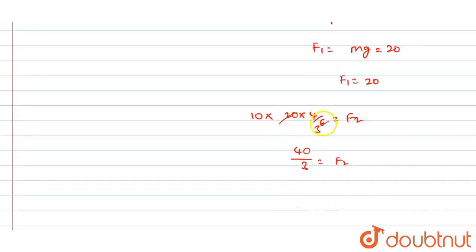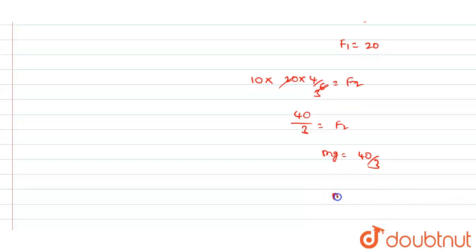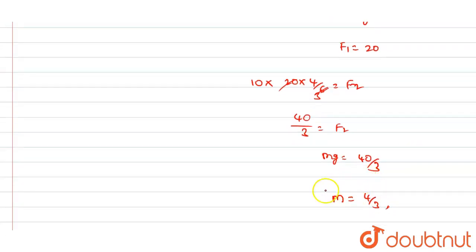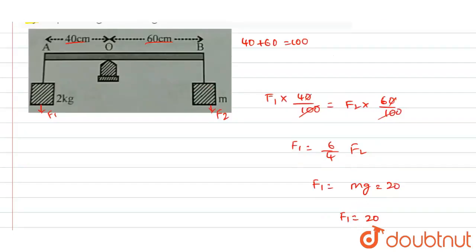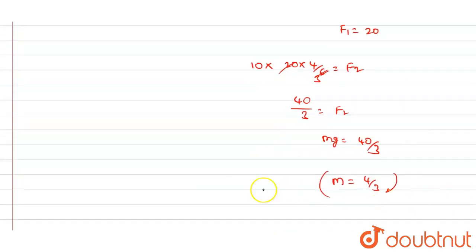In the table I have cut down this 6 and 20, so 40 divided by 3 equals F2. The mg value will be equals to 40 divided by 3, and the value of m will be equals to 4 divided by 3 because the value of g is 10 meters per second squared. So the value of m will become 4 divided by 3. This is the correct answer for this question.